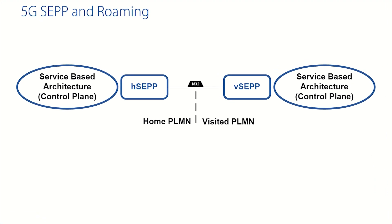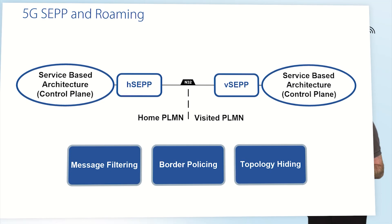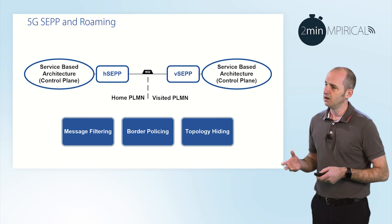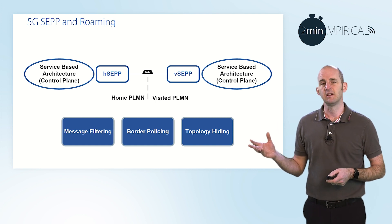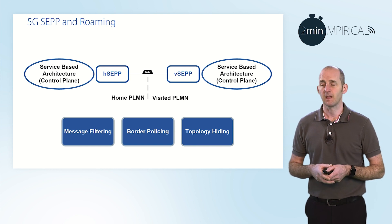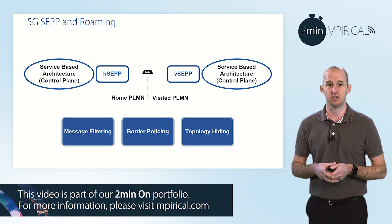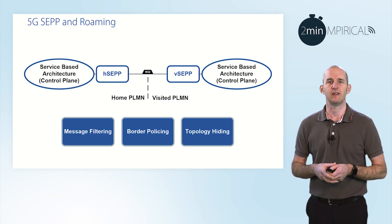The responsibility of the Security Edge Protection Proxy is to sit on that traffic flow and make sure we conduct responsibilities such as message filtering, to ensure only the correct messages are being exchanged. We can conduct border policing to ensure that malicious messages aren't entering the network, and we can also conduct topology hiding to make sure that any message leaving the network does not contain any sensitive addressing information relative to that network.